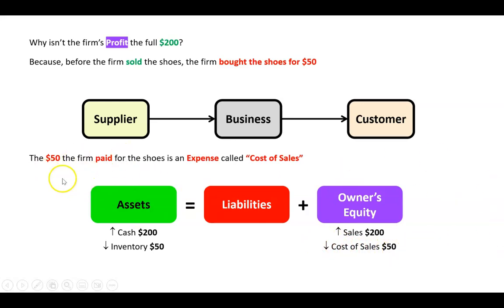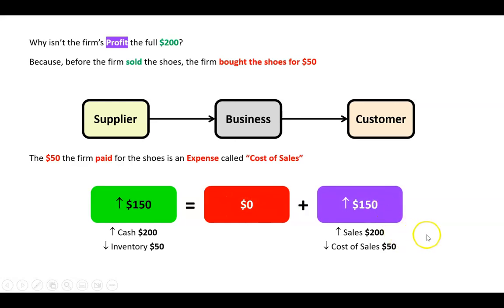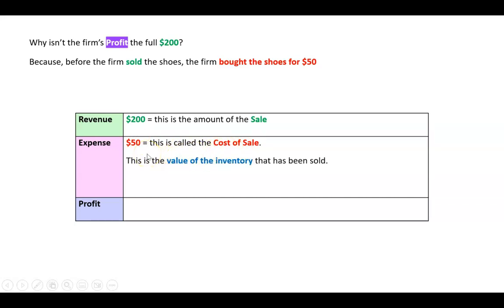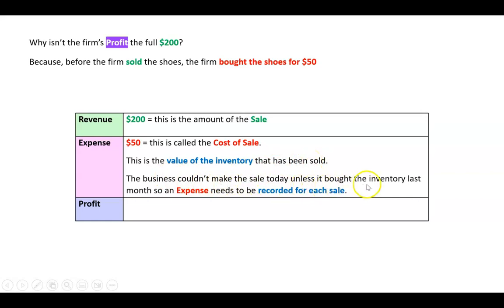The expense called cost of sales decreases owners equity by $50. Assets go up by $200 but down by $50 — net $150. Liabilities are unchanged, and owners equity also increases by $150, so everything balances. Revenue was $200, the cost of sales expense was $50, and profit was $150. An expense must be recorded for every sale to match the inventory that was given up.